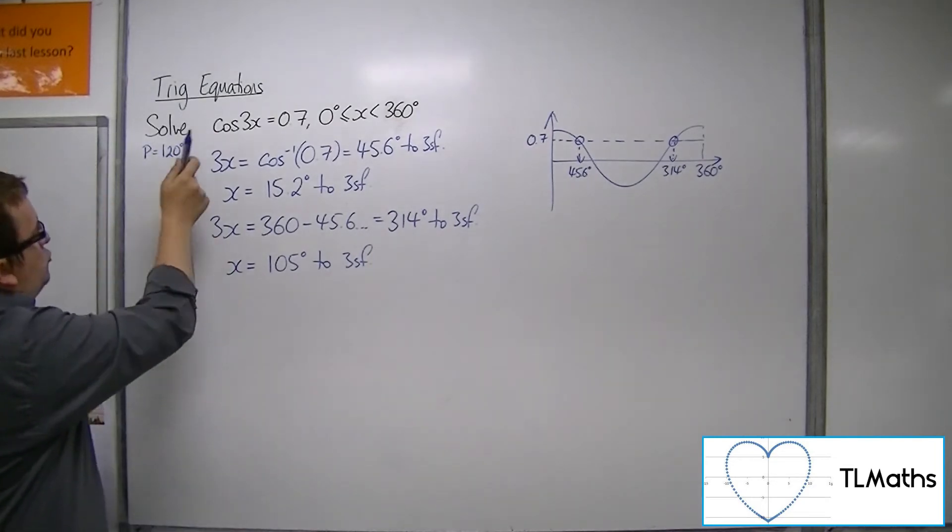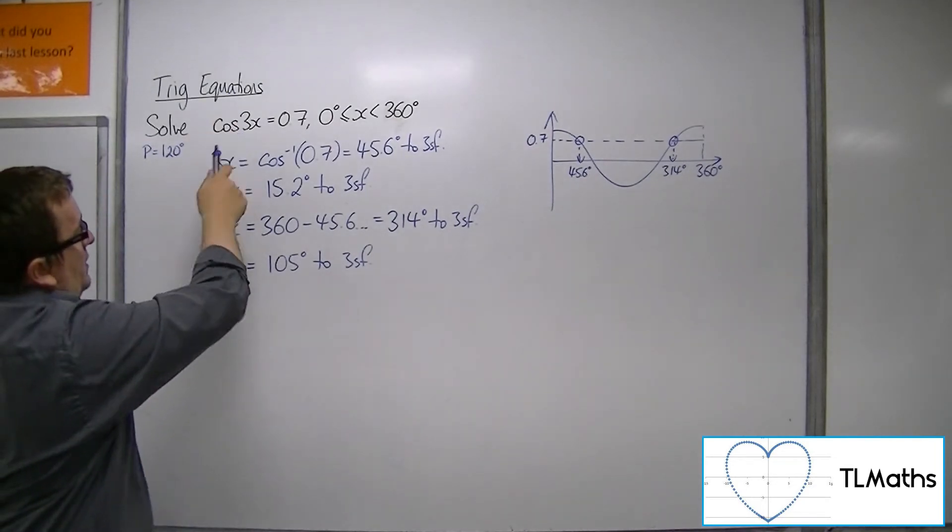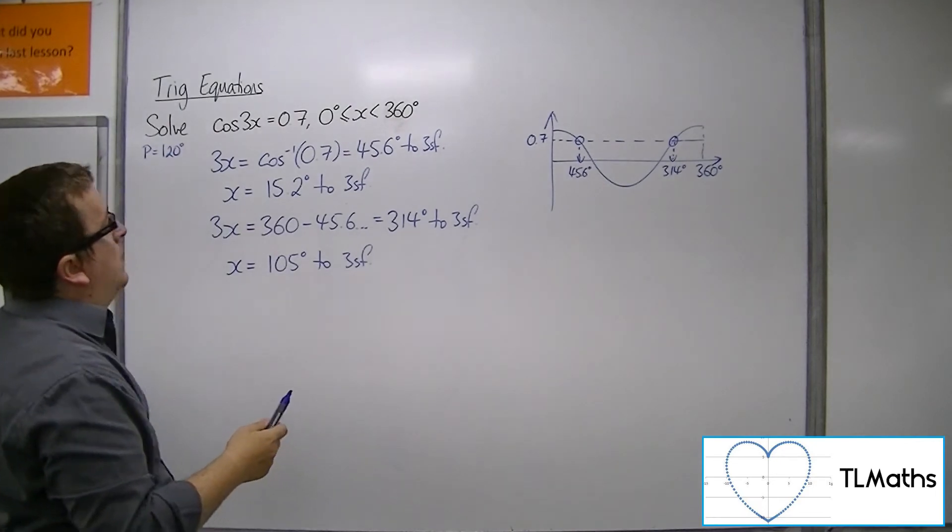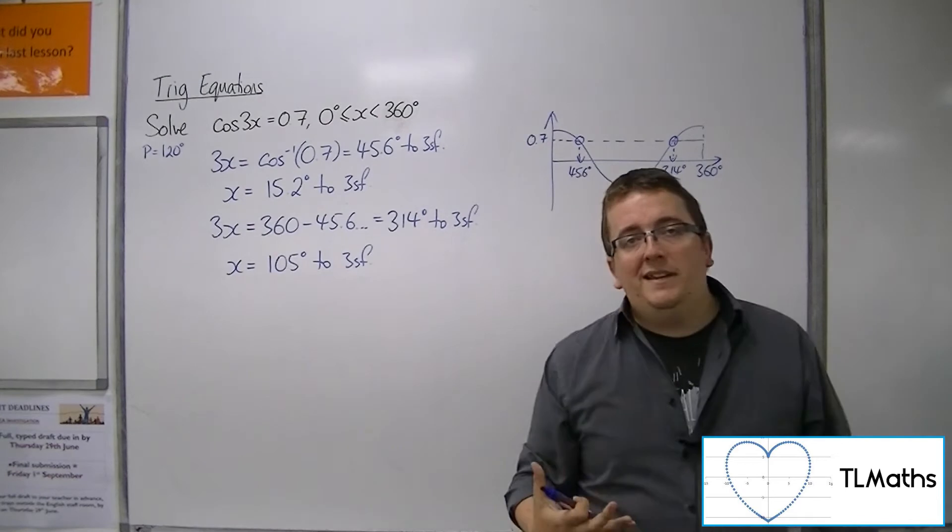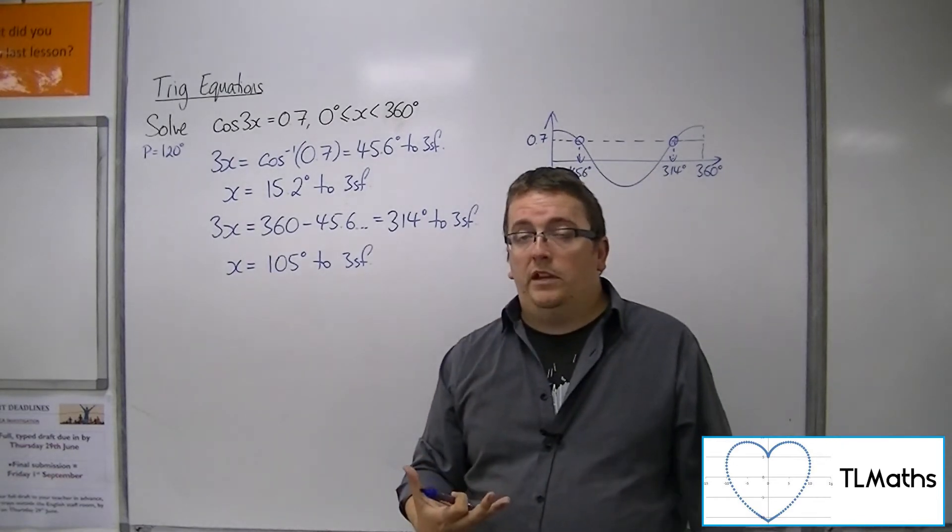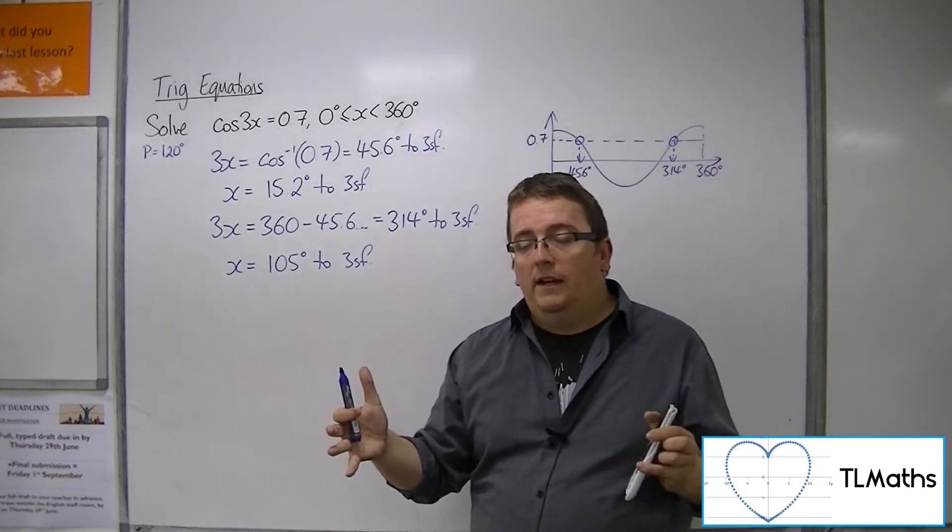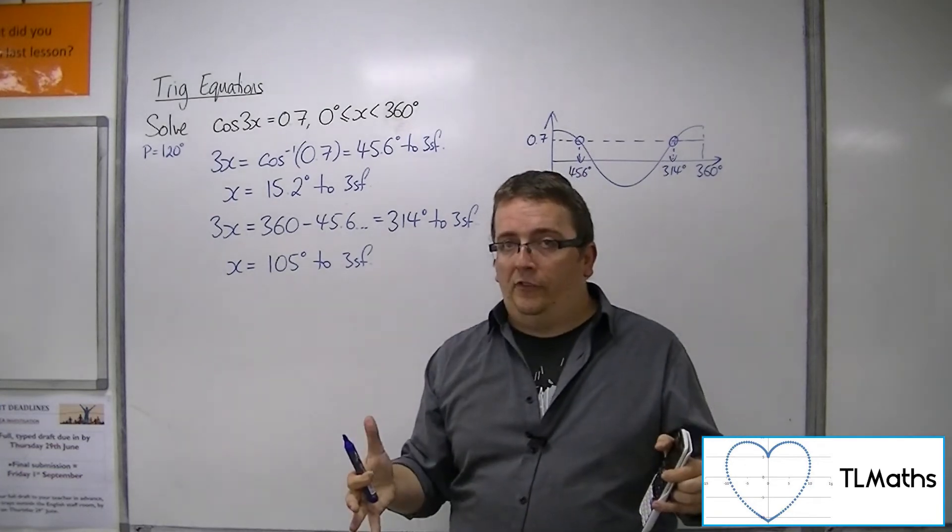Now because I've done a stretch by factor 1 third parallel to the x-axis, originally I would have expected two solutions, but because I can now fit three of the cosine curves in between 0 and 360, I'd expect to have six solutions.